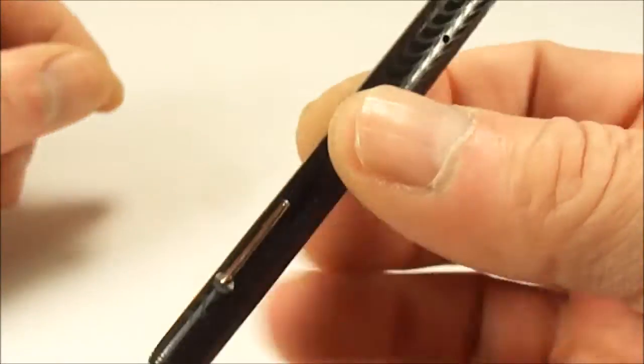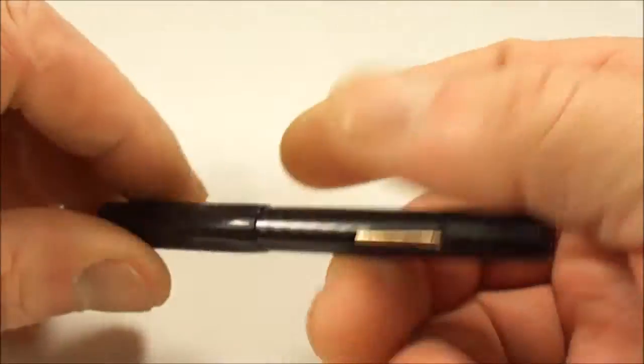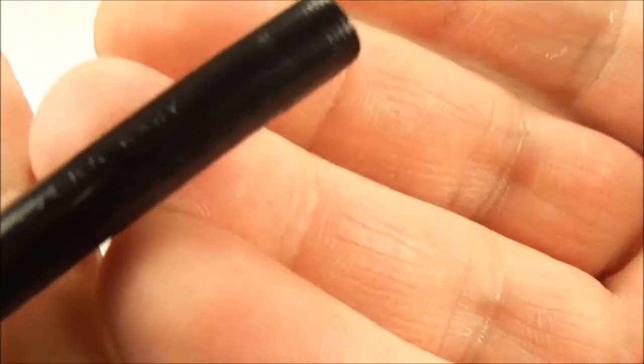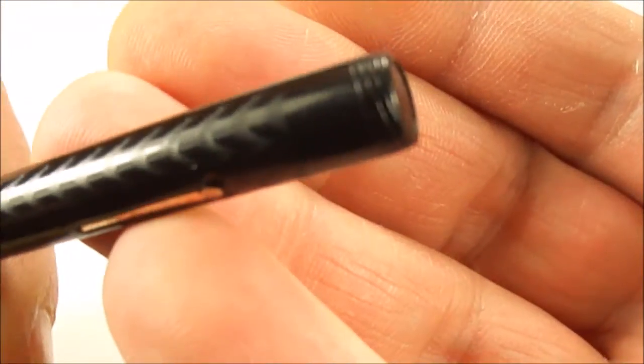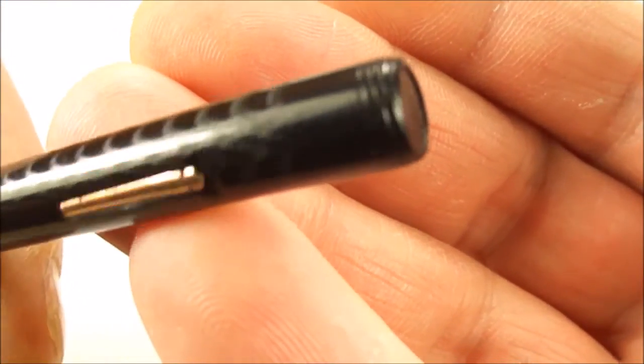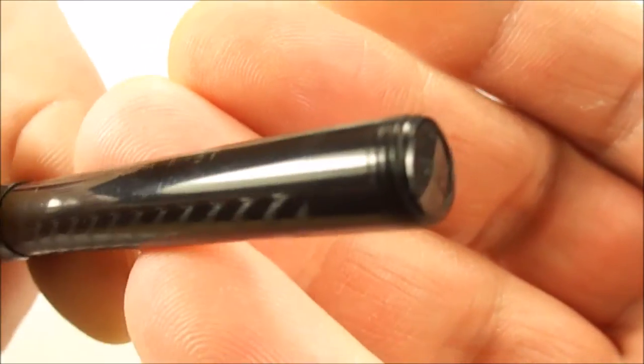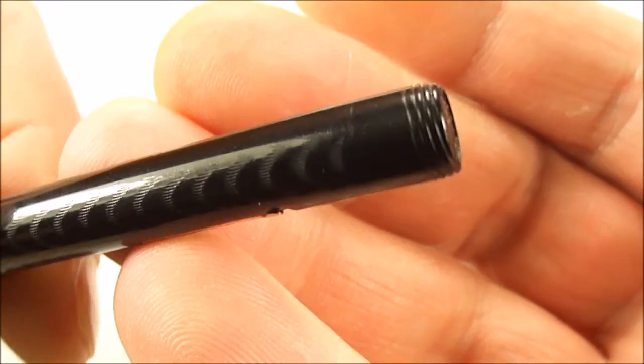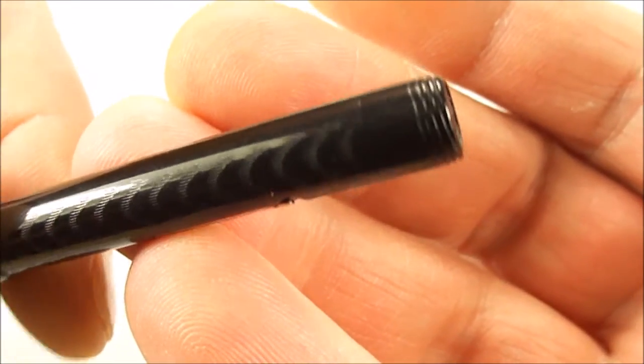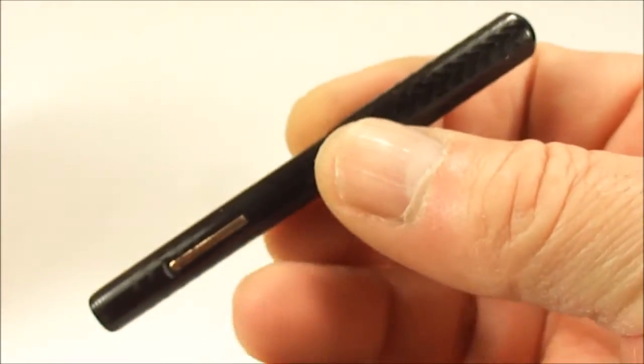So an absolutely beautiful example. One thing on this particular pen you may notice: to the very end of the barrel, you can see it's got a little thread. That, as we'll show you in a moment, is so you can actually post the cap.